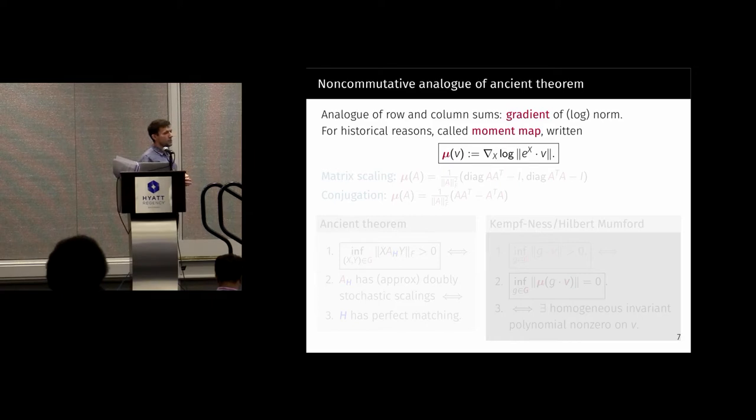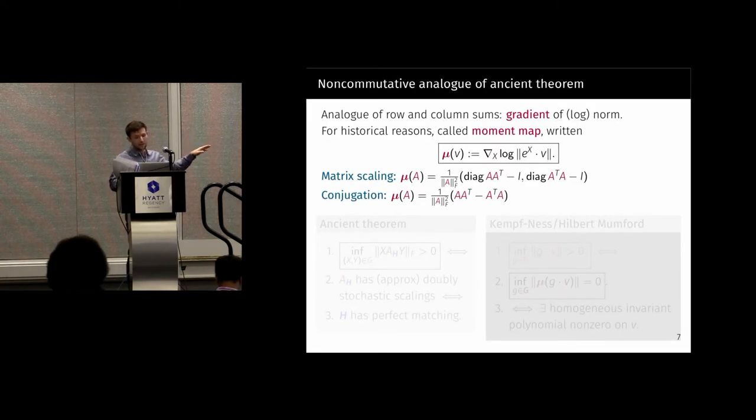And for other reasons, which will be clear later, you also put e to the x before you take the gradient. As I just mentioned in matrix scaling, it takes this form. And there's another normalization factor because of the log. Another example is the conjugation action takes that form. In general, if our group was the invertible matrices, the moment map is going to be a Hermitian matrix. For matrix scaling, it happened to be diagonal matrices.